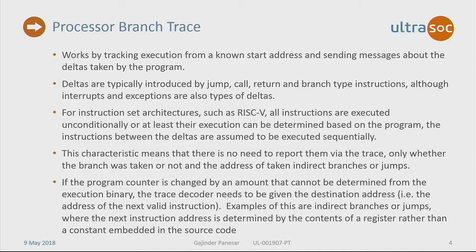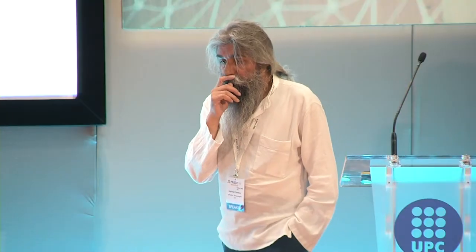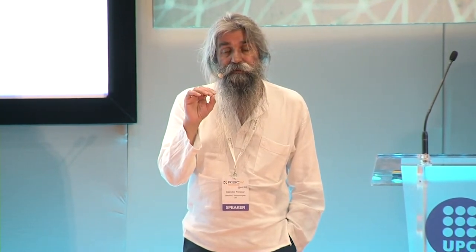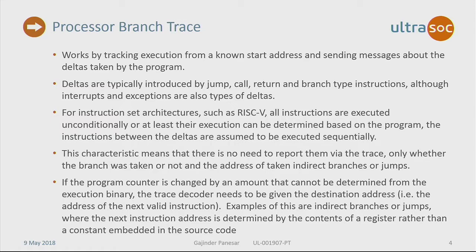Branch trace works by tracking execution from a known start address and then sending out messages when deltas happen in the program. Deltas are typically introduced by jumps, calls, returns, and branches. For instruction set architectures like RISC-V — a very nice instruction set — this works quite well because there are no predicated instructions, so all we need to worry about is branches, jumps, etc. We only emit bit vectors saying when branches are taken or not taken, and only send out addresses that can't be predicted at decode time. If the program counter changes by an amount that can't be determined by the execution binary, only then do we send the destination address.